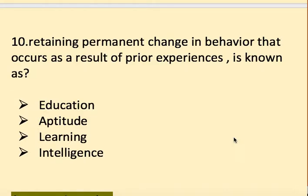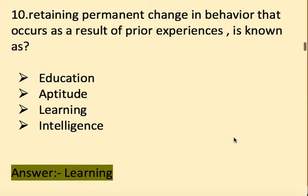Next question: A relatively permanent change in behavior that occurs as a result of prior experience is known as — options: education, attitude, learning, and intelligence. The right answer is learning.